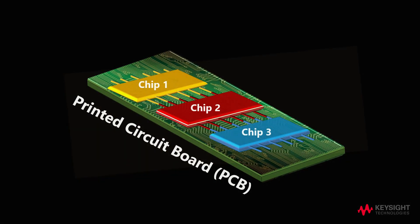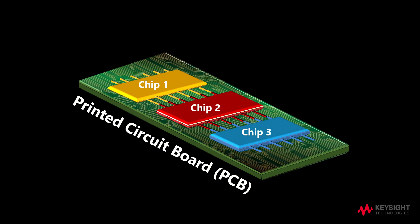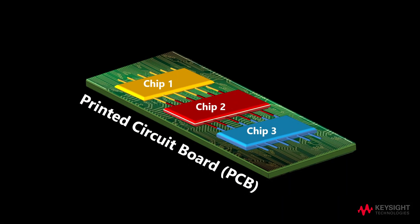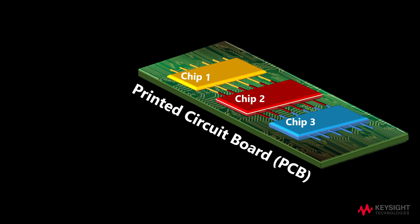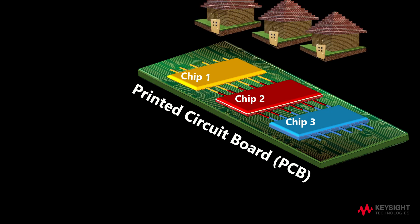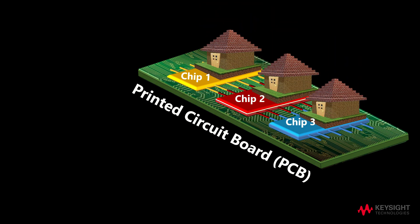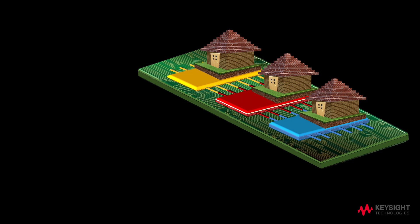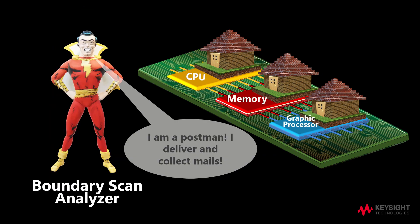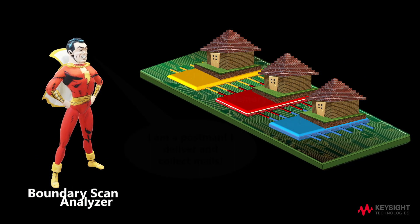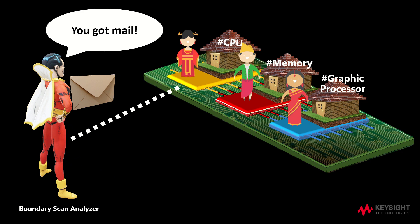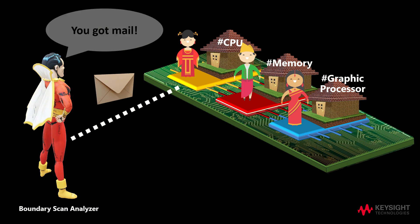Now, imagine having a printed circuit board with three chips on it. Allow me to make this visualization simple to comprehend. Imagine that each chip is like a house — a house with one resident and one distinct address. Now, to deliver the mail to the right address, we need a postman to match the mail to the house address. For example, a letter to the address CPU will go to the CPU.